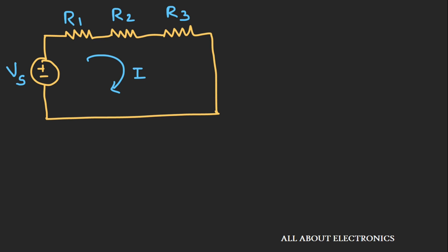Here we have three resistors R1, R2, and R3 which are connected in series with one voltage source. The current flowing through this circuit is I. Whenever the resistors are connected in series combination, the same current will flow through each resistor. So here the same current I will flow through resistors R1, R2, and R3.